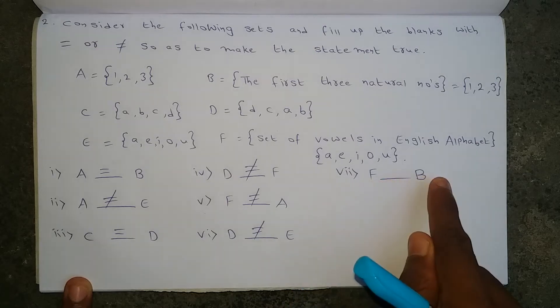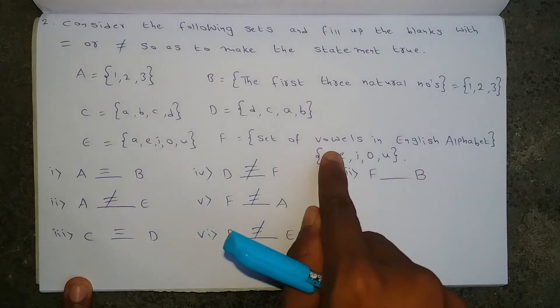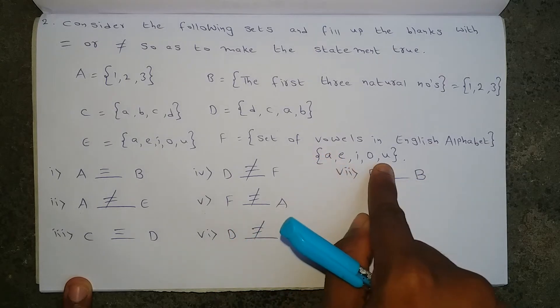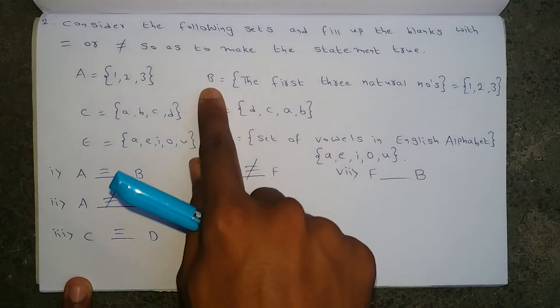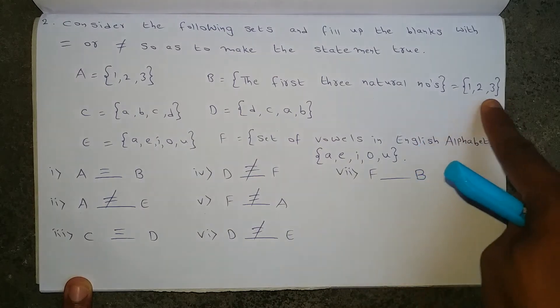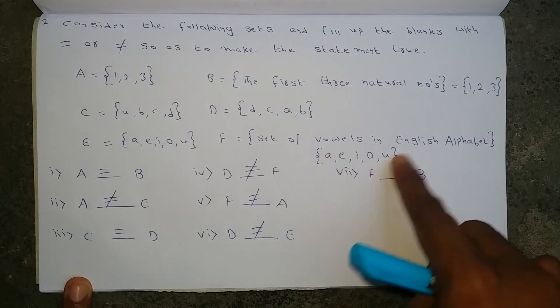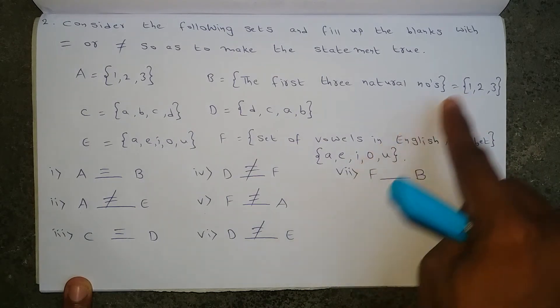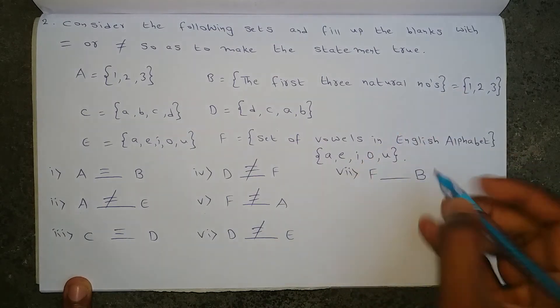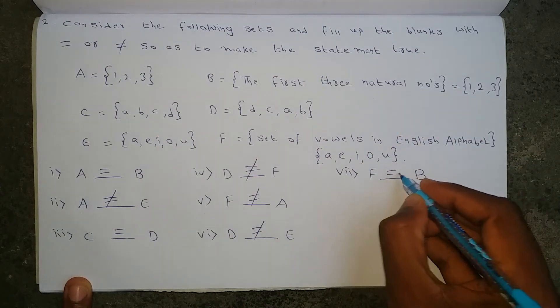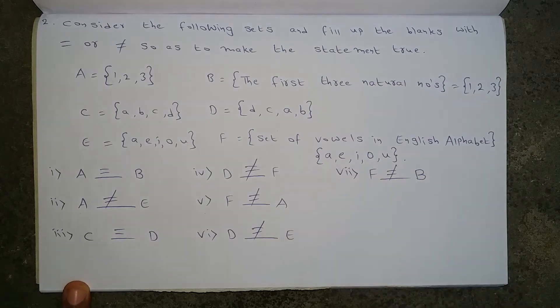Next, set F and set B. Set F has A, E, I, O, U and set B has 1, 2, 3 — alphabets and numbers are completely different. So set F and set B are not equal.